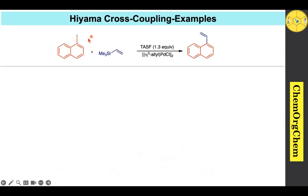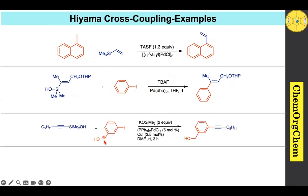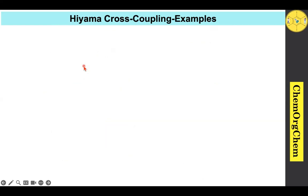Now let's look at Hiyama cross-coupling reaction examples. In the first example, an iodo compound reacts with a vinyl-substituted silane substrate under palladium(0) catalysis with TASF as activator to produce the vinyl-substituted product. In another example, a silanol is activated by TBAF under palladium(0) conditions to give the carbon-carbon coupling product. A silyl acetate reacting with an iodo compound under basic conditions with palladium(0) catalysis also produces the corresponding coupling product. In another case, a silanol derivative with silver oxide as activator produces the carbon-carbon coupling product.